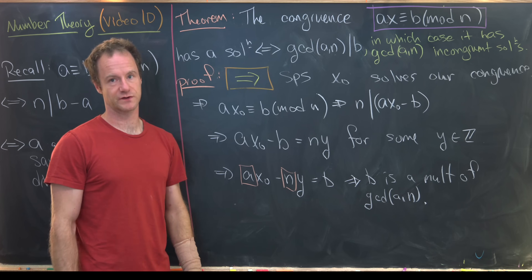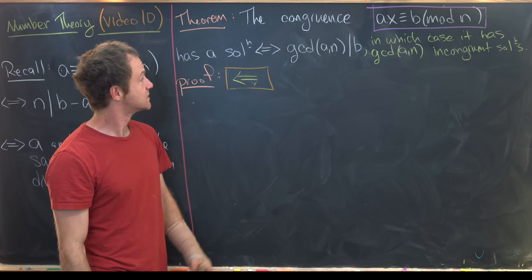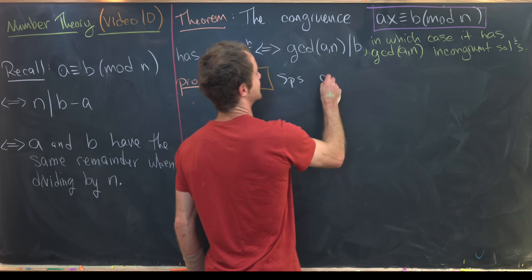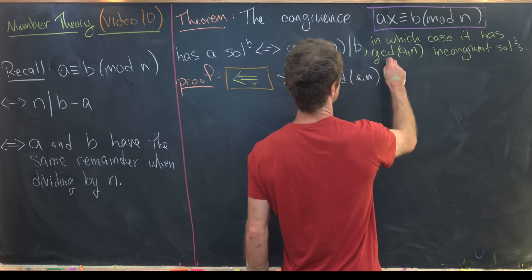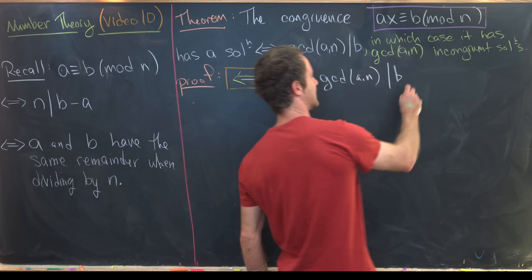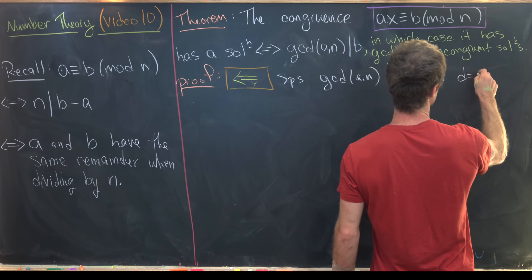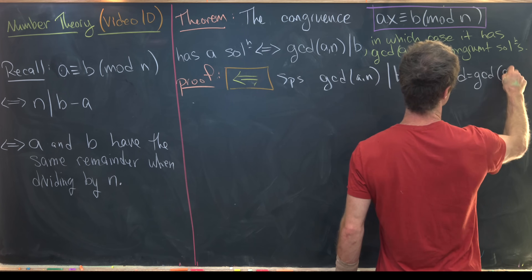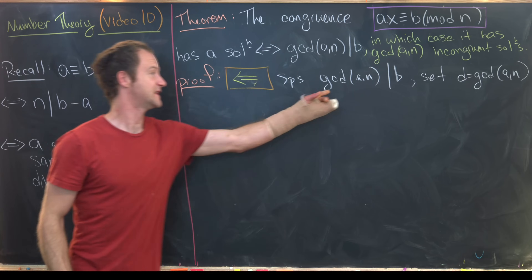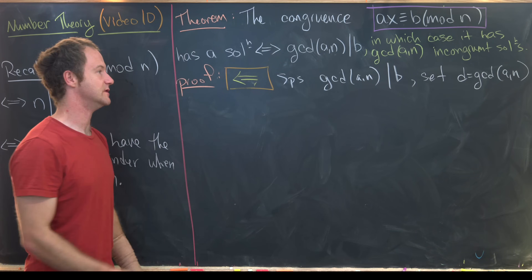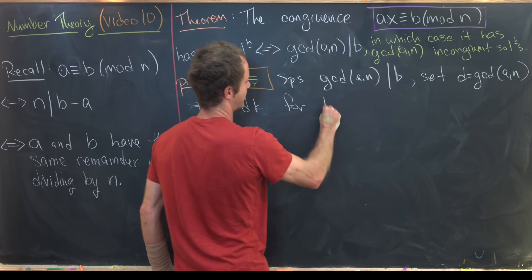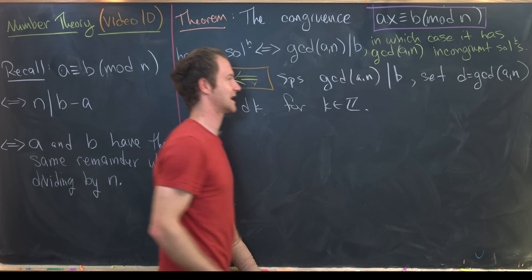Now let's move to the reverse direction. We suppose that gcd(a, n) divides b. Let's introduce notation: set d equal to gcd(a, n). This divisibility tells us we can write b as d times k for some integer k.